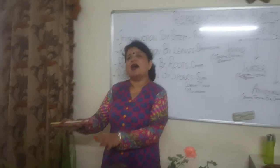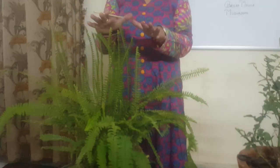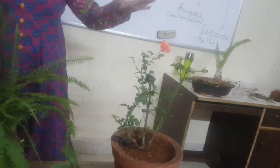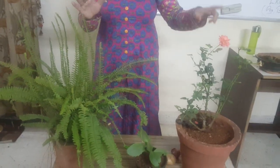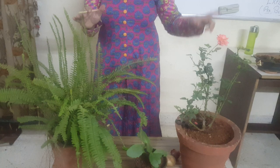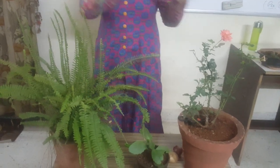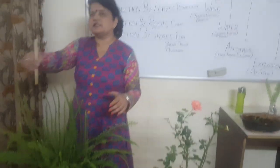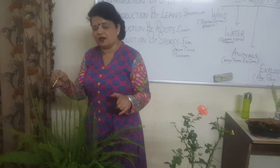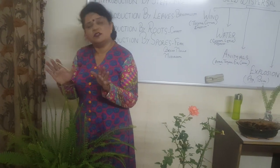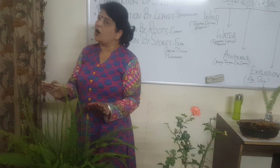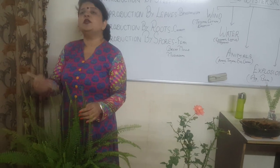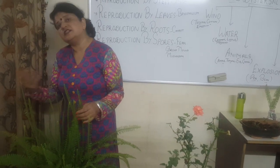Now I have two plants for you — one is a flowering plant and the other is a non-flowering plant. You can see the rose plant has a flower. Flowering plants are plants that bear flowers; non-flowering plants do not. This plant is fern — it will not bear flowers throughout the year. So the question arises: how does reproduction take place in this plant?